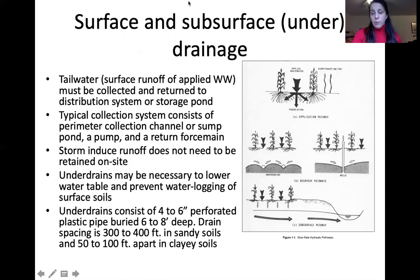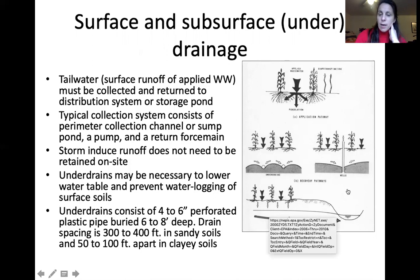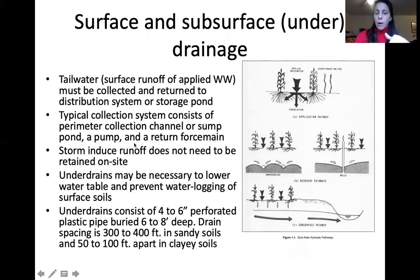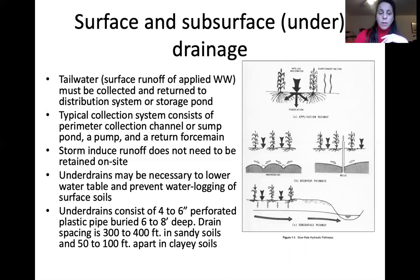Some systems incorporate under drainage — for example, Ohio croplands often have tile drainage due to wetland-adjacent areas with high water tables. During applications, a collection well or under drain may collect water, which is then reapplied via sump pump or pond. These are necessary to prevent waterlogging or groundwater impact. Under drains are typically 4- to 6-inch perforated pipes buried 6–8 feet deep, spaced about 300 feet apart in sandy soils and closer together in clay soils.